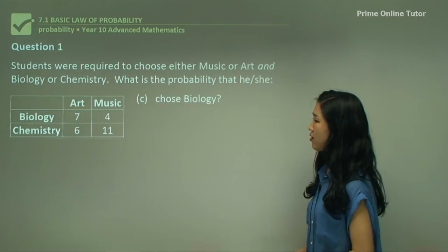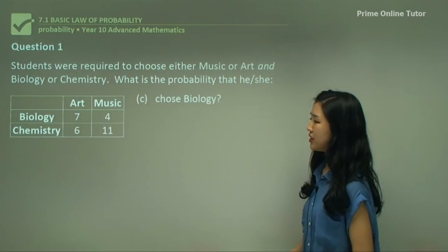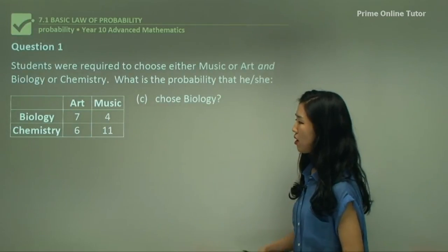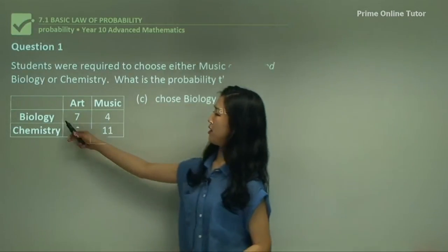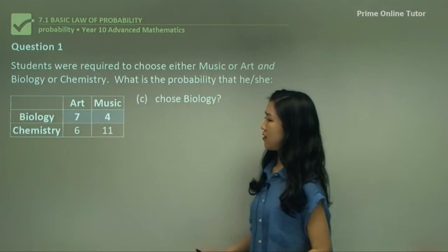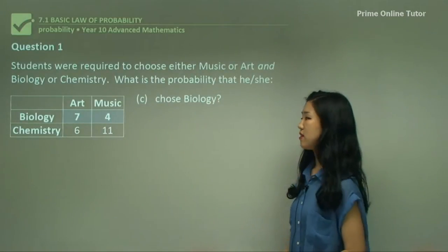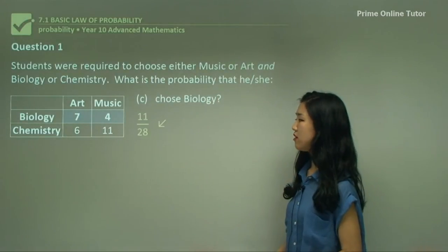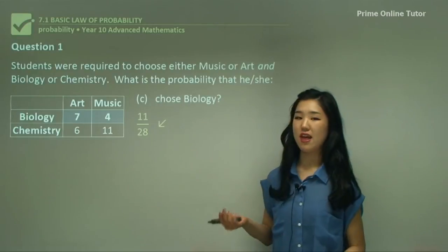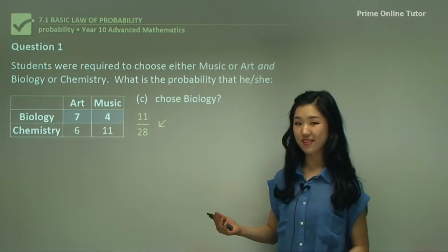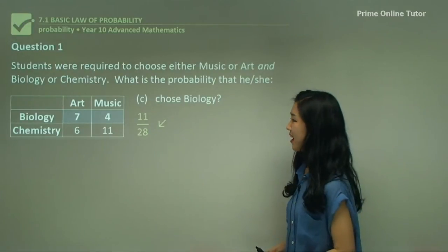Now C — who chooses biology? Biology is this row here, so 7 and 4 students. So in total, 11 out of the 28 students.